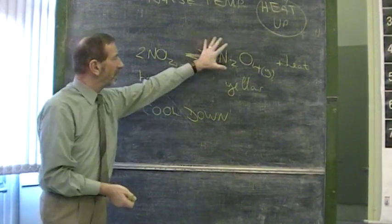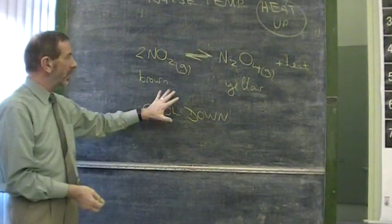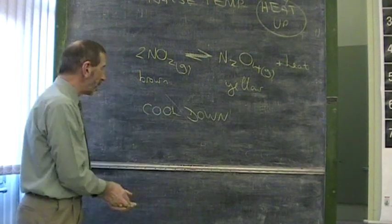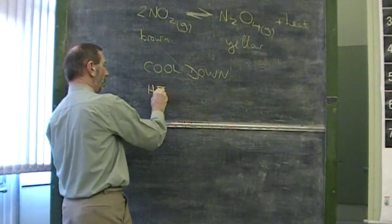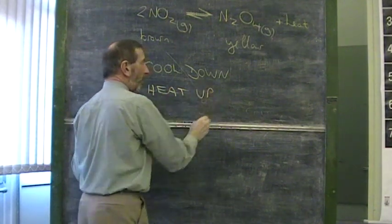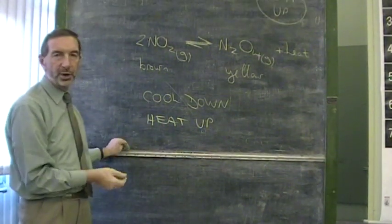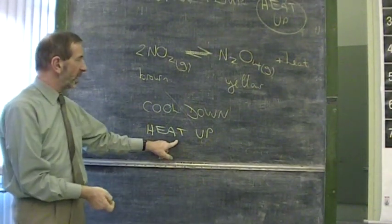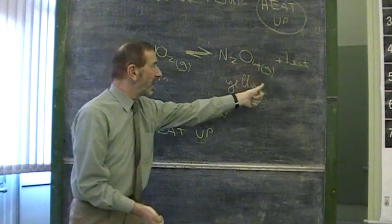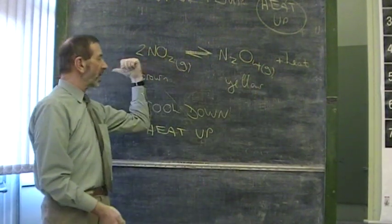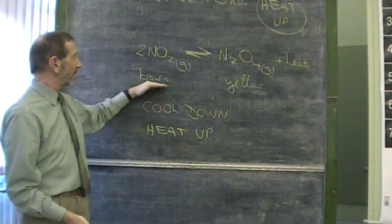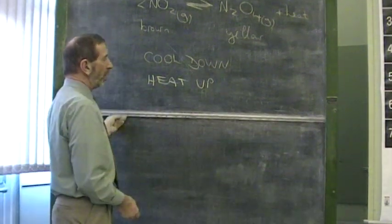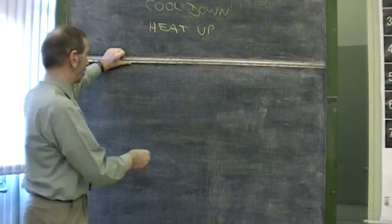So we find that when we take this mixture and cool it down, the mixture becomes paler and more yellow. Likewise, if we were to heat this up, the system doesn't want to be altered. The only way it can counteract the heating is not to make even more heat - that would make matters worse - but to get rid of heat and shift to the left. So when you heat this up, the gas tends to become darker. Here's another example of a reversible reaction where we can change the temperature.